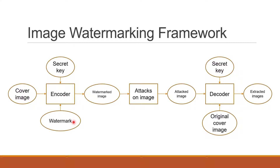Here is the image watermarking framework. First, we have the cover image, which will go through an encoder. The watermark will be embedded based on a secret key, and then we have the watermarked image. Attacks may be used on the image, whether intentionally or non-intentionally. Then this image will go through a decoder for extraction using the original cover image and a secret key. Finally, we will have the extracted cover image and watermark image. However, some algorithms may not need this original cover image.